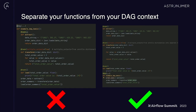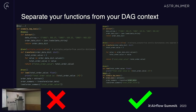Separate your functions from your DAG context. In the example on the left, all the functions are inside of the DAG, and this is an anti-pattern because there's no way to import those functions into a test file now — they're a part of the DAG object. As opposed to having separate functions where you can treat them as their own individual operators that can then be tested in your unit tests.